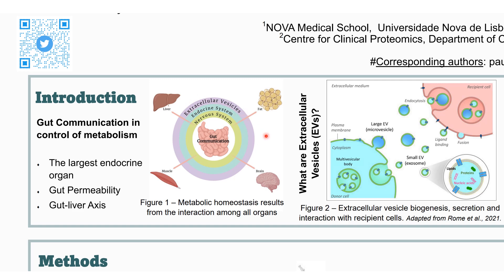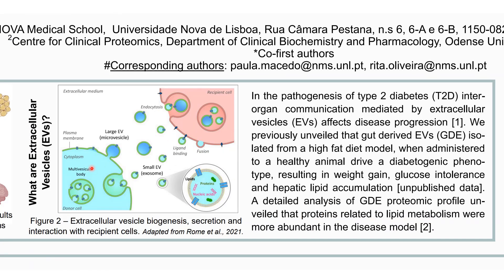But what are these EVs? EVs can be formed within the lumen of a multivesicular body, but there are also large EVs that generate directly within the plasma membrane. The multivesicular body can also fuse with the plasma membrane and then release the small EVs. If we look at one of these EVs to see its contents, we will find lipids, proteins, and nucleic acids that will afterwards be received by the other cell, enhancing intracellular communication. The fate of these EVs in the recipient cells includes membrane fusion, ligand binding, or endocytosis mechanisms.